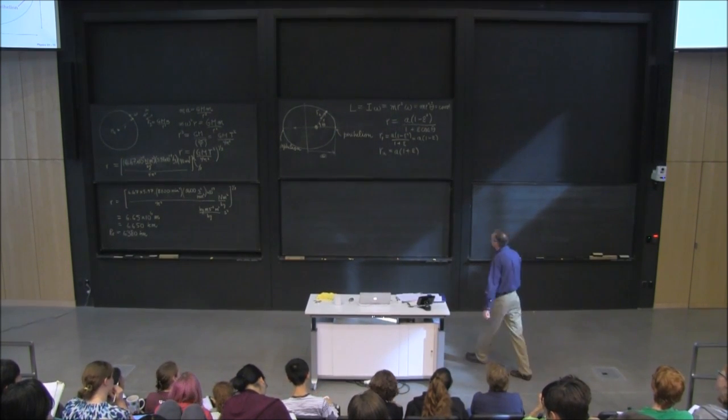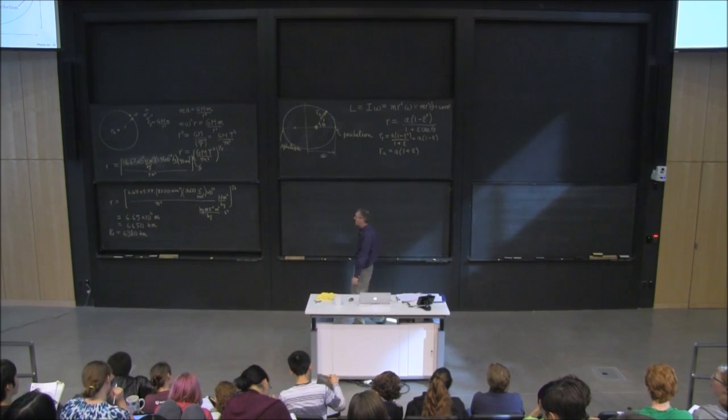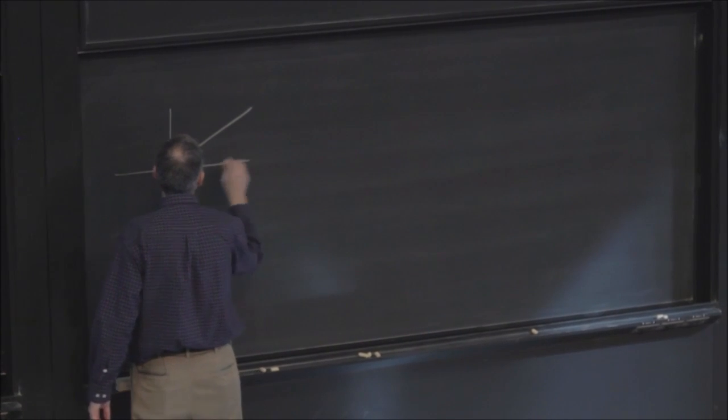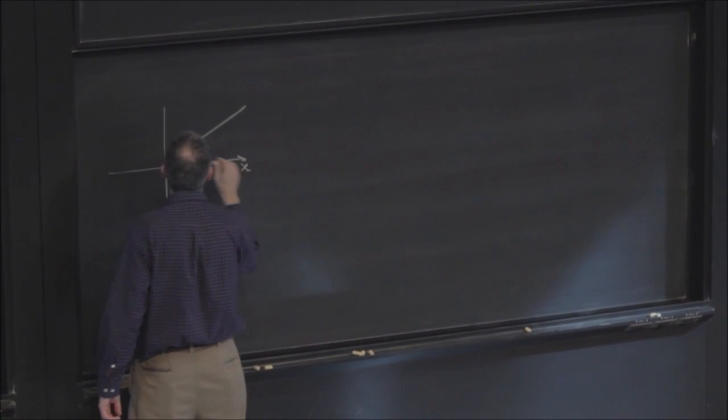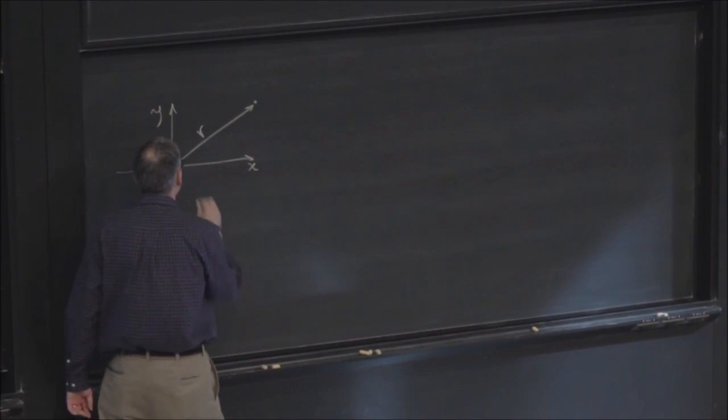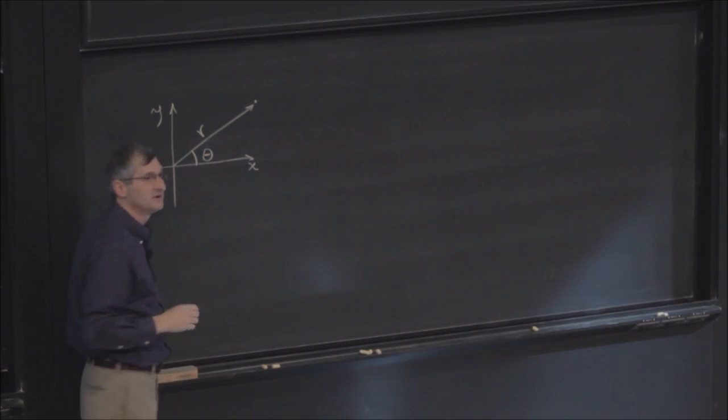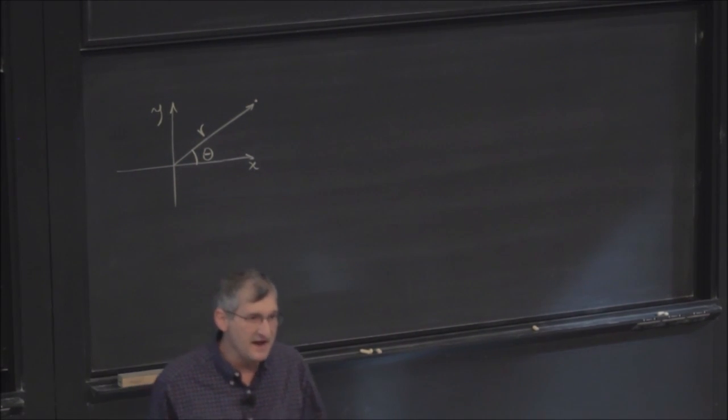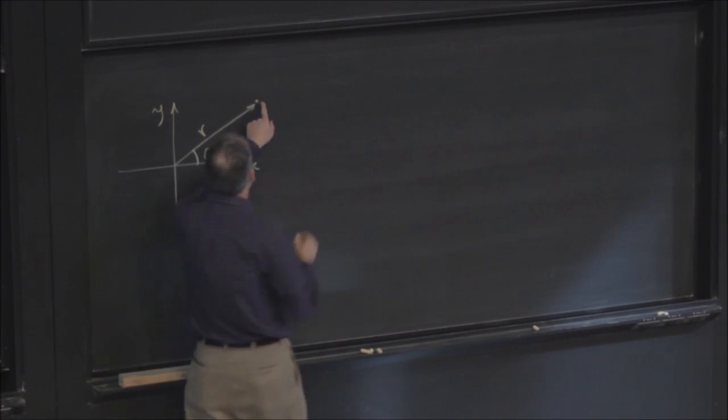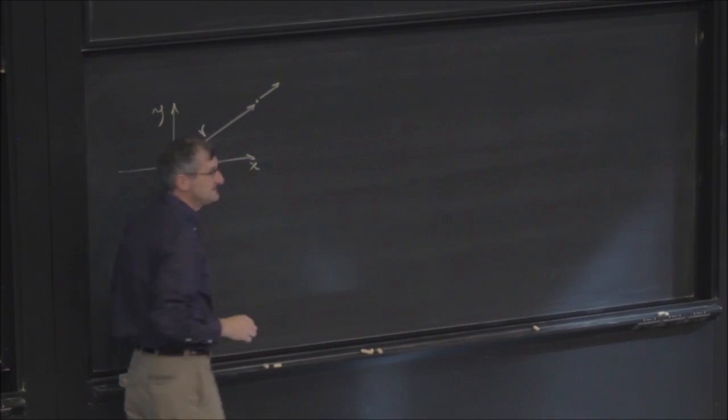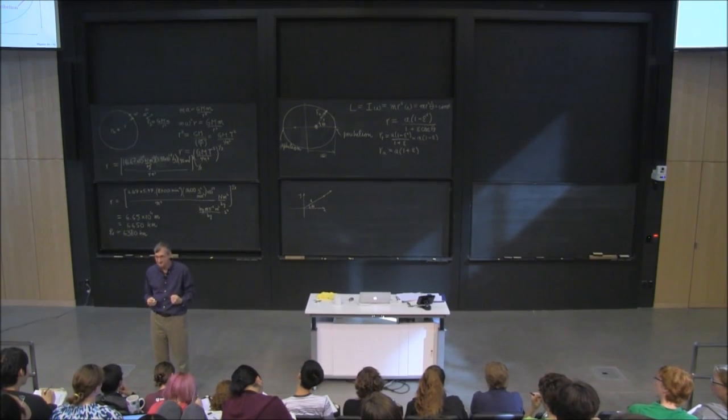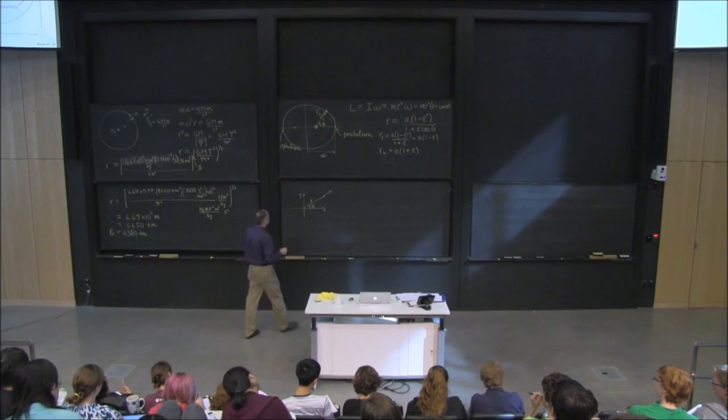We have to go back a little bit and remind ourselves about unit vectors in polar coordinates. So let me just say here's x and here's y. There's a point. And these are the polar coordinates that we're going to use. And we defined before a unit vector in the radial direction to be a vector of length one that points in the direction you would go if you increased r but held theta fixed.